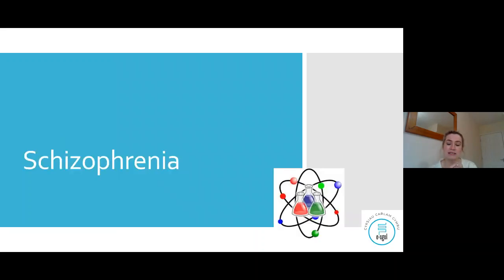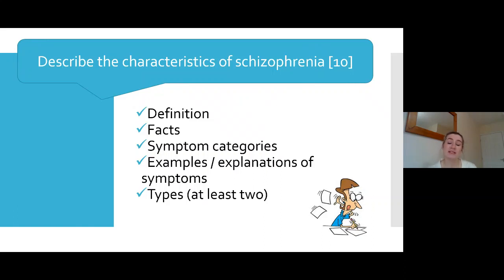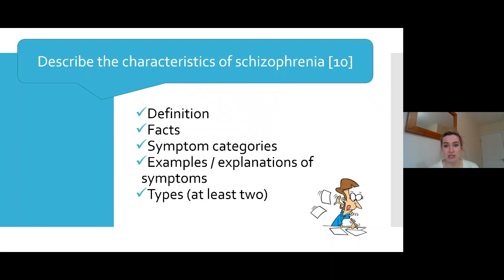Today's session, like the other sessions, is focusing on schizophrenia. One of the first things you will have learned about schizophrenia are the characteristics — what actually is it, what's it defined as. Although you could be asked a direct question like 'describe the characteristics of schizophrenia', characteristics will come into almost every question. It's really important that you have a clear and in-depth understanding of them, that you can identify and explain them. It will be either a 10 or a 5 mark question.